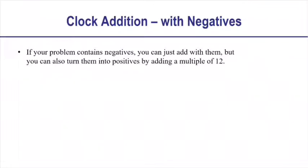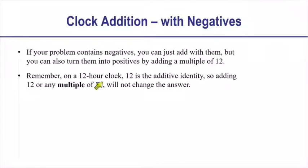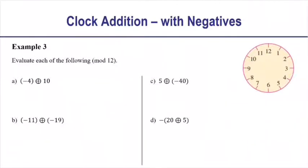Now let's talk about negatives. If your problem contains negatives, you can add using the integer rules you already know, but you can also turn them into positives by adding multiples of 12. On a 12-hour clock, 12 is the additive identity, so adding 12 or any multiple of 12 will not change the answer. Let's go through Example 3. For part A: negative 4 circle-plus 10. Negative 4 plus 10 is positive 6, which is a valid answer. So negative 4 circle-plus 10 is 6.